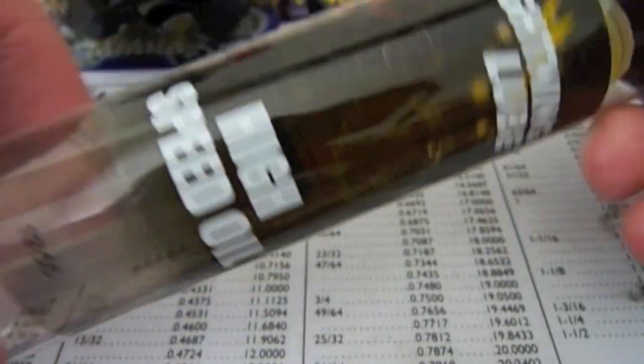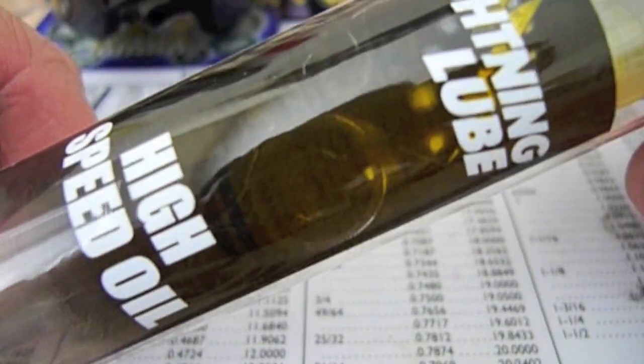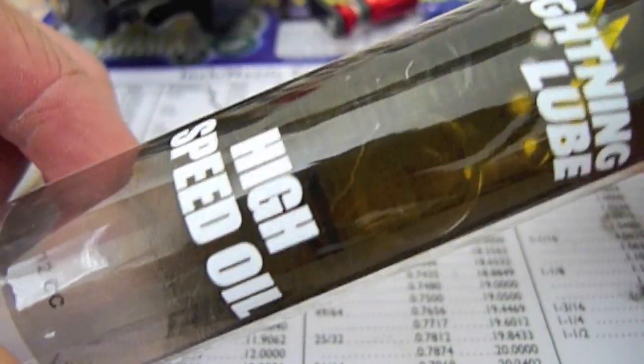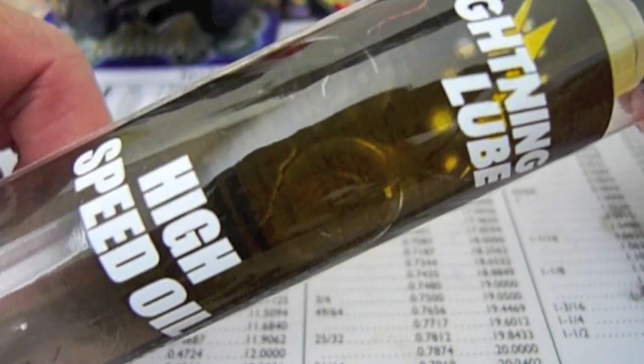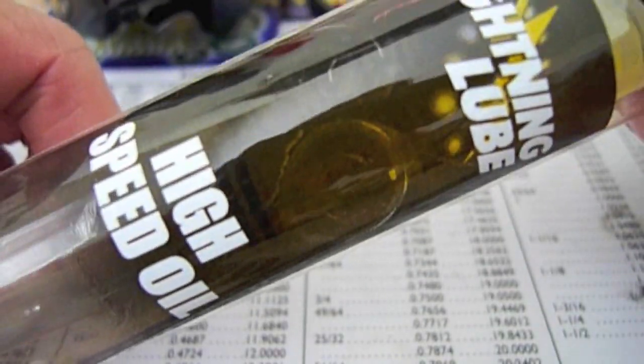And of course, you're going to need reel lube. This is the one I use, it's the Lightning Lube High Speed Oil from Boca Bearings. It's specially formulated for ceramic and stainless steel bearings. It works really, really good.